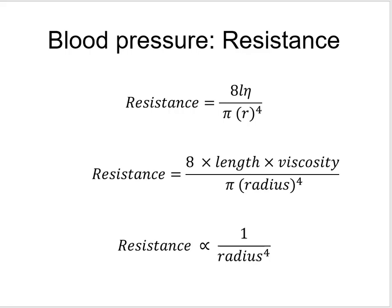That brings us to blood pressure directly. One of the variables we talk about is peripheral resistance. As peripheral resistance goes up, blood pressure goes up — let me emphasize that: as peripheral resistance goes up, blood pressure itself will go up. So what are the components of peripheral resistance?